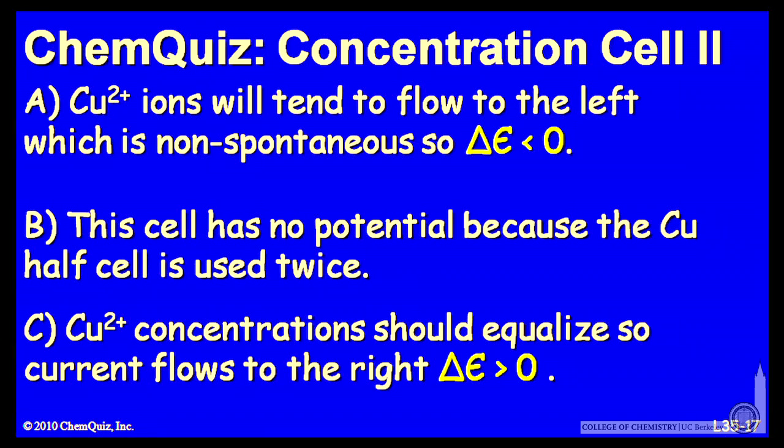B, this cell has no potential because the copper half cell is used twice. Or C, copper 2+ concentration should equalize, so current flows to the right, and that means delta E greater than 0. Think about those three and make a selection.